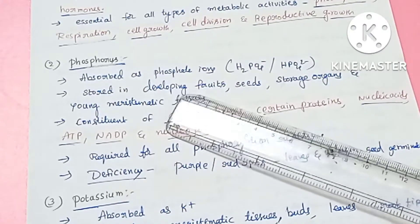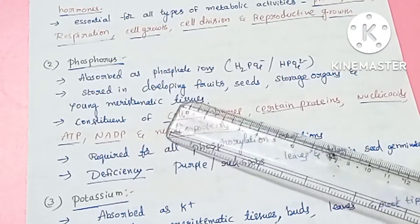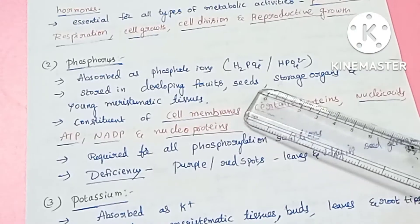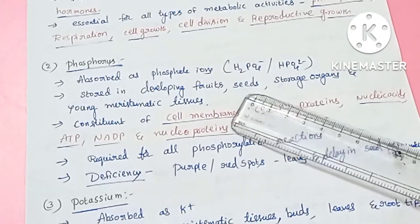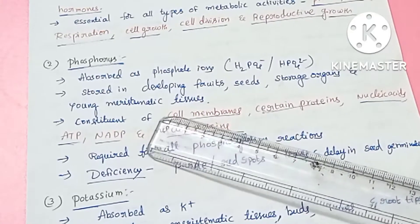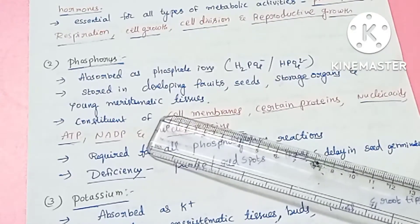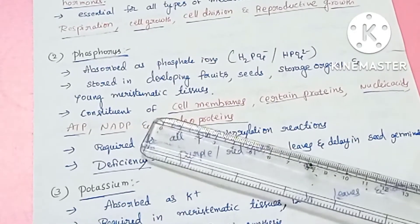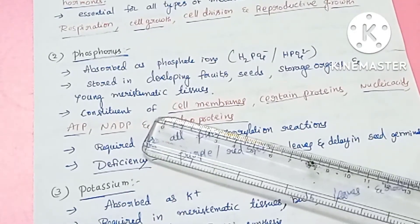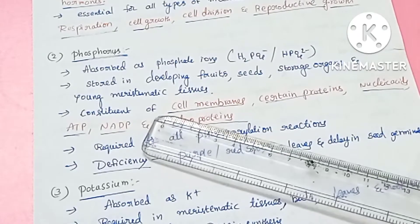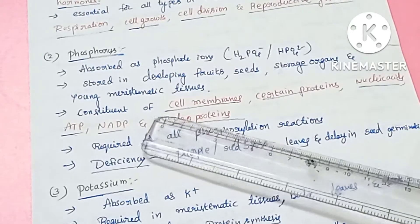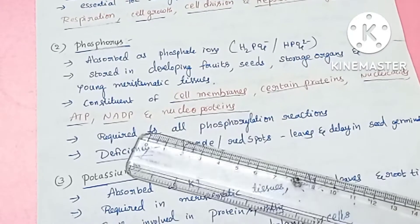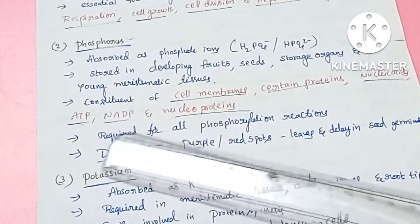Phosphates are stored in fruits, seeds, and storage organs, as well as young meristematic tissues. It is also a constituent of the cell membrane, certain proteins, and nucleic acids.